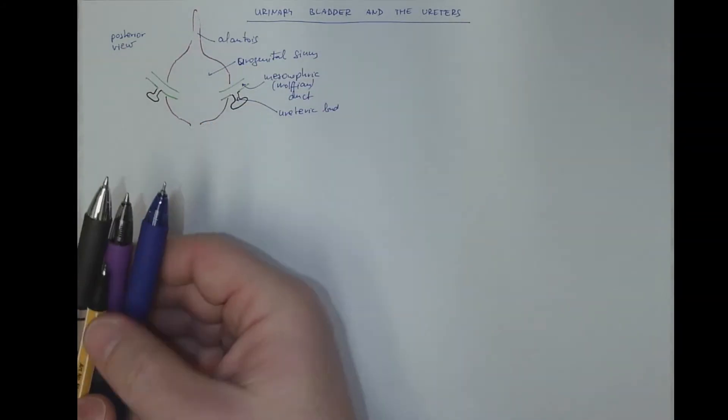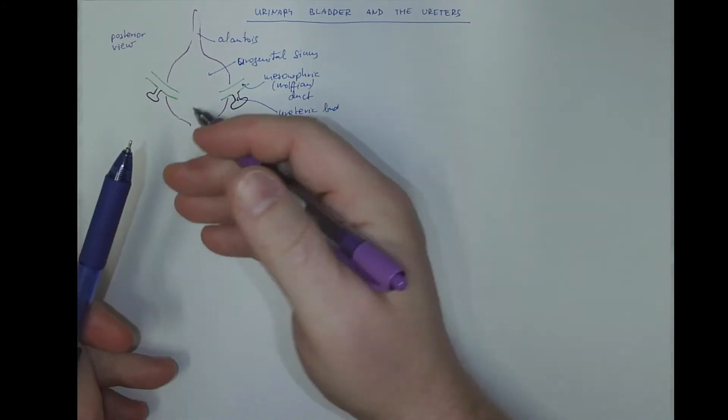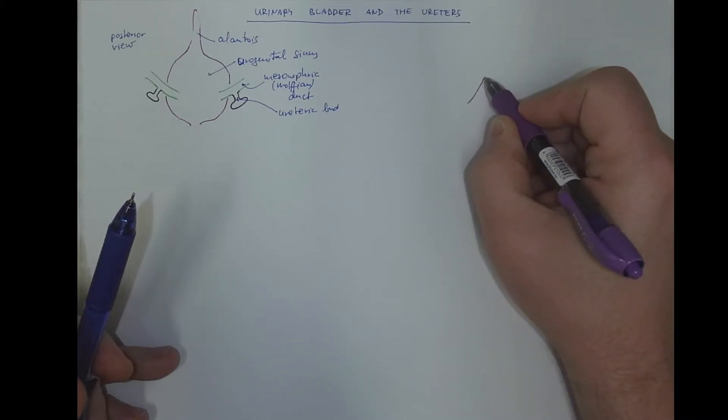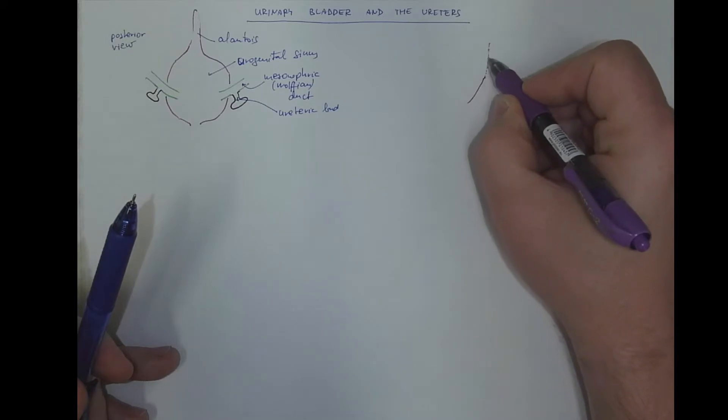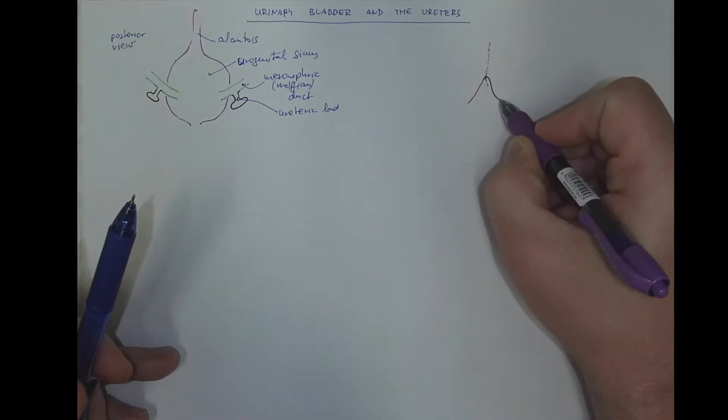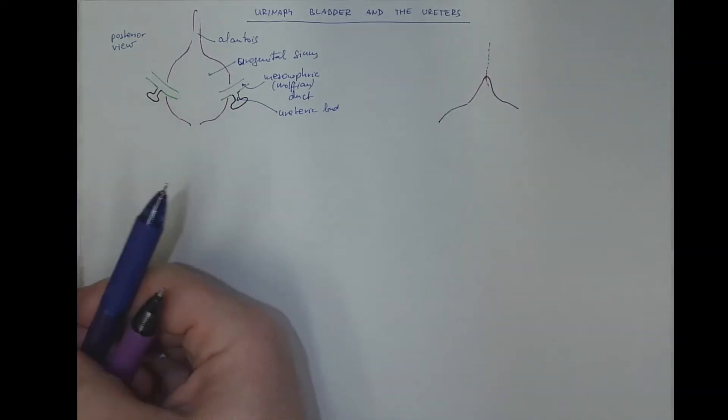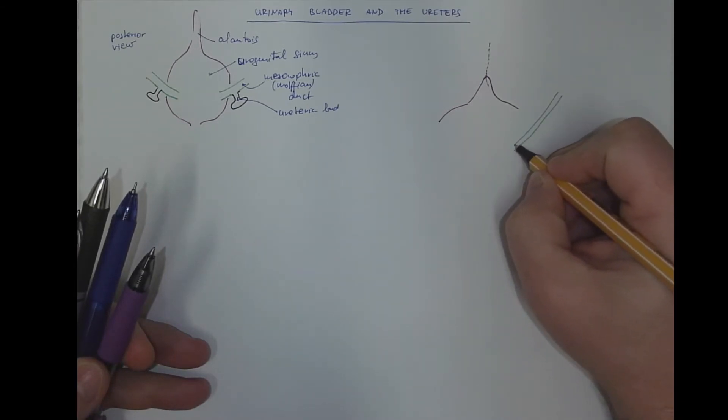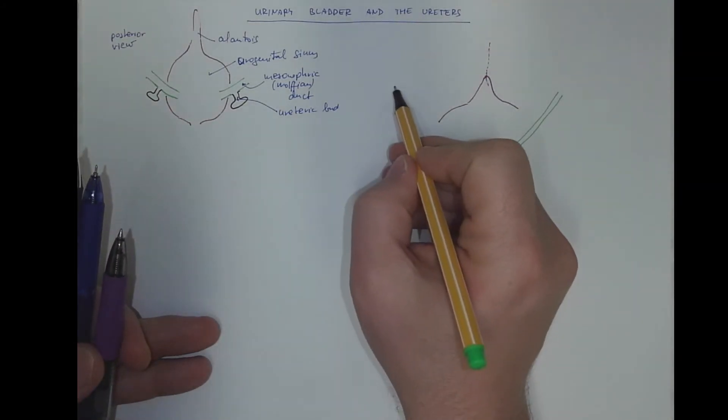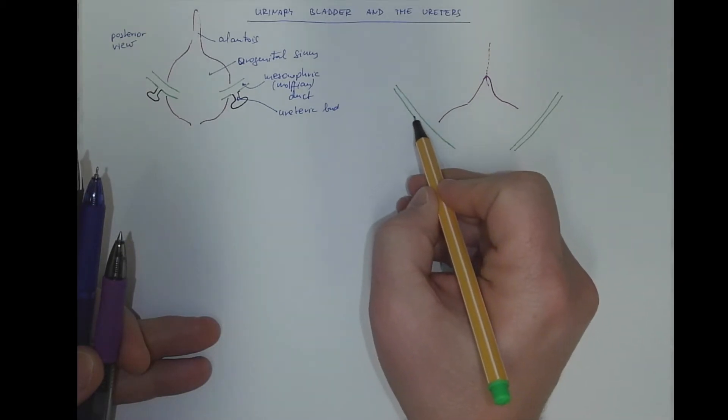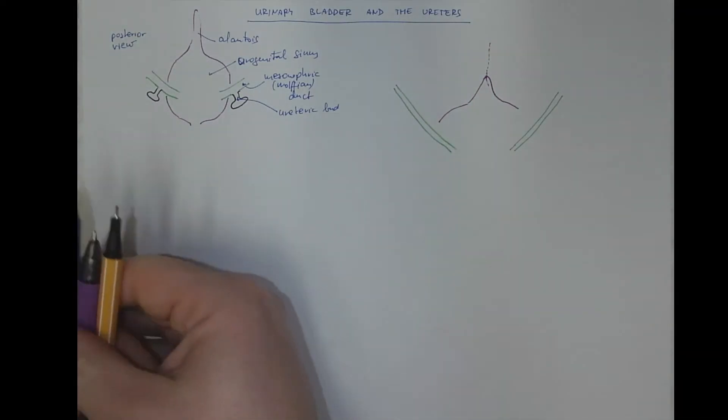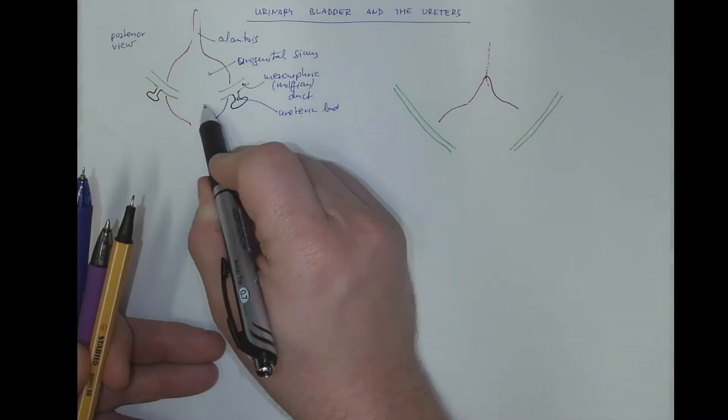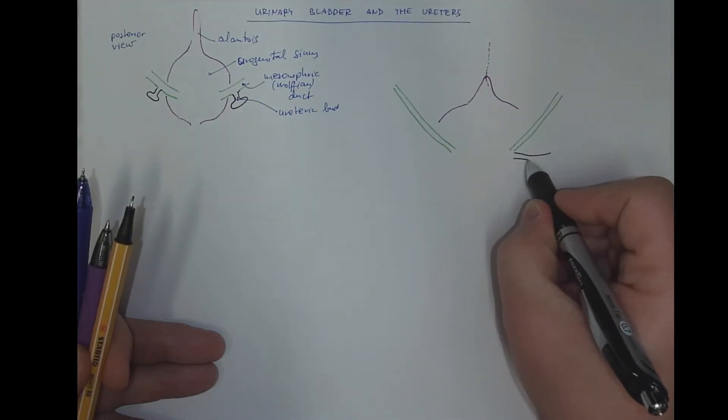Later on the proportions will change with differential growth of these various structures. So it will look like that. The allantois will partly obliterate the mesonephric duct. The mesonephric duct will enter the future urinary bladder, but this ureteric bud will become independent as this branching side will be incorporated into the growing wall of the bladder.